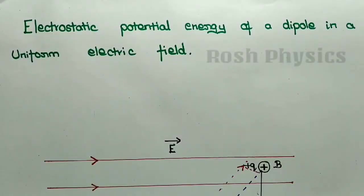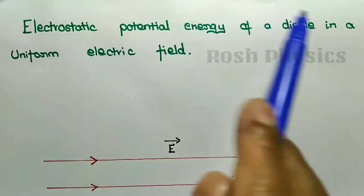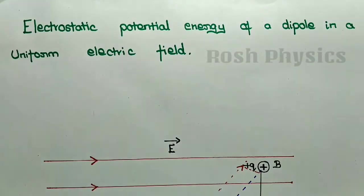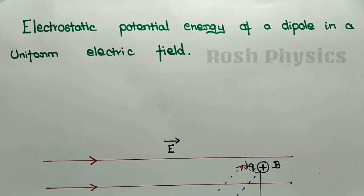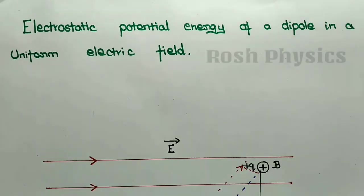Hi students, this is Roshan. Today in this video we are going to discuss about the electrostatic potential energy of a dipole in a uniform electrical field. This question is mainly about how a dipole behaves and how to deal with the potential energy of the dipole when it is placed in a uniform electrical field.